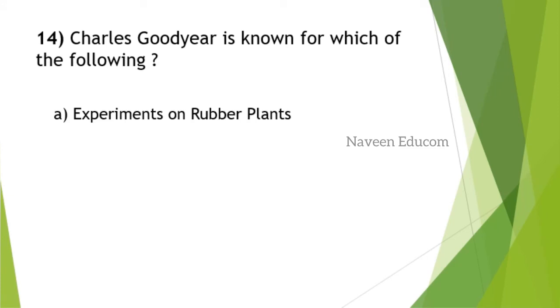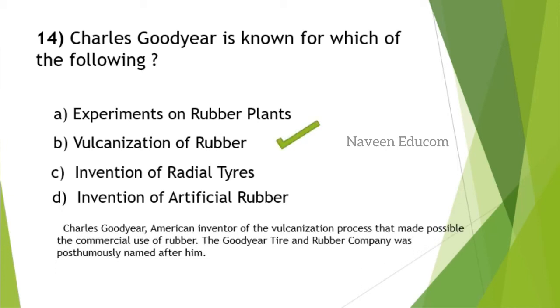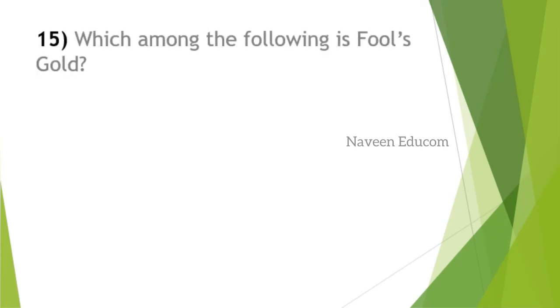Charles Goodyear is known for which of the following? This is from polymer chemistry you studied in 12th standard NCERT. Options are experiments on rubber plants, vulcanization of rubber, invention of radial tires, invention of artificial rubber. The answer is option B, vulcanization of rubber. He made possible the commercial use of rubber. The Goodyear Tire and Rubber Company was posthumously named after him.